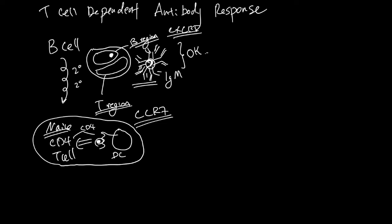It will now become the T follicular helper cell, and this T follicular helper cell will now go from the T region to the surface of the B region. An activated B cell, maybe one of the clones, can end up meeting this T follicular helper cell at the entry point of the B region.